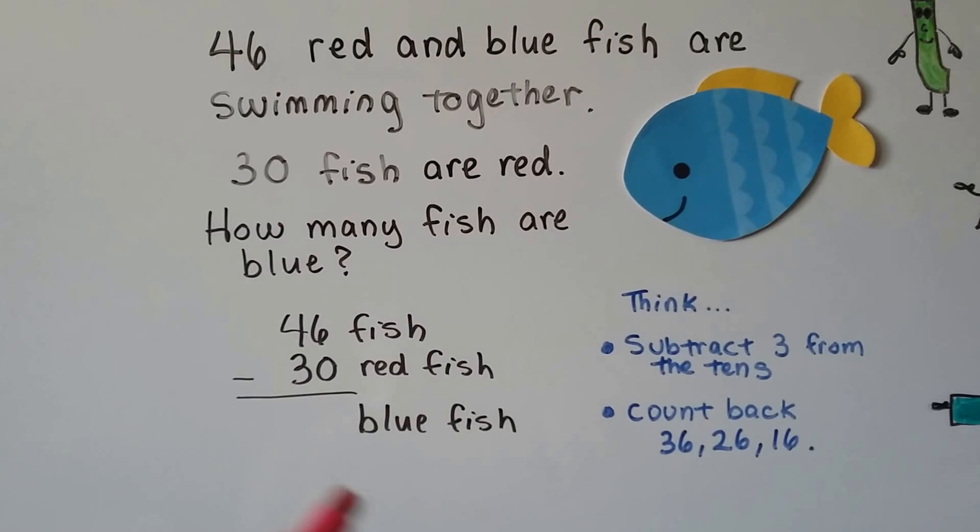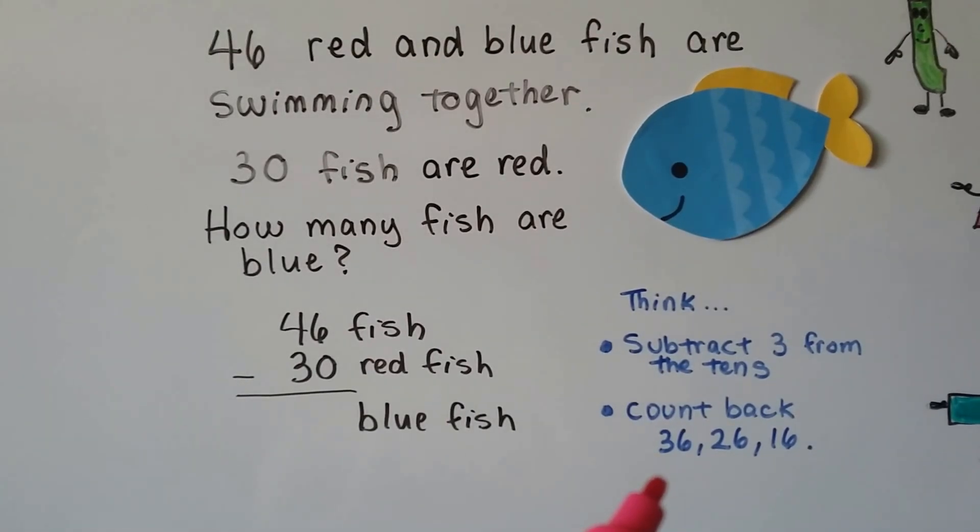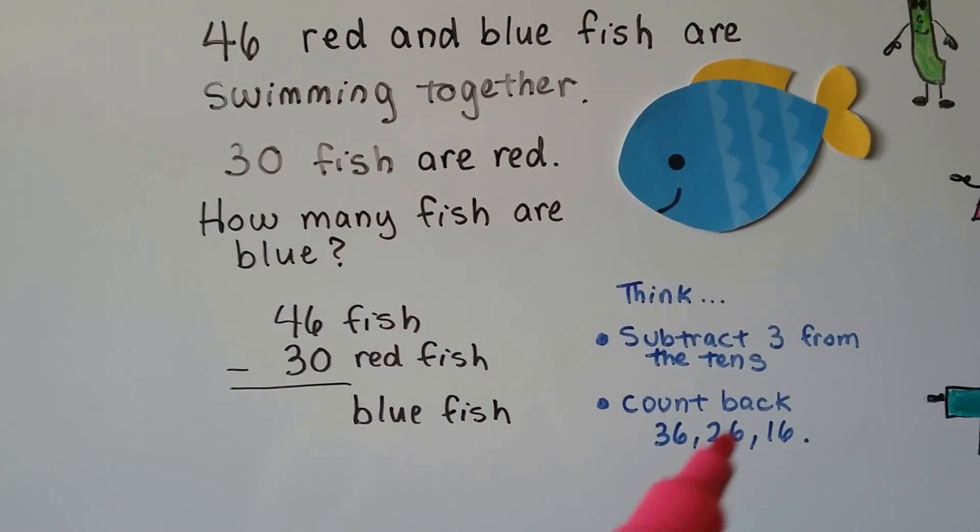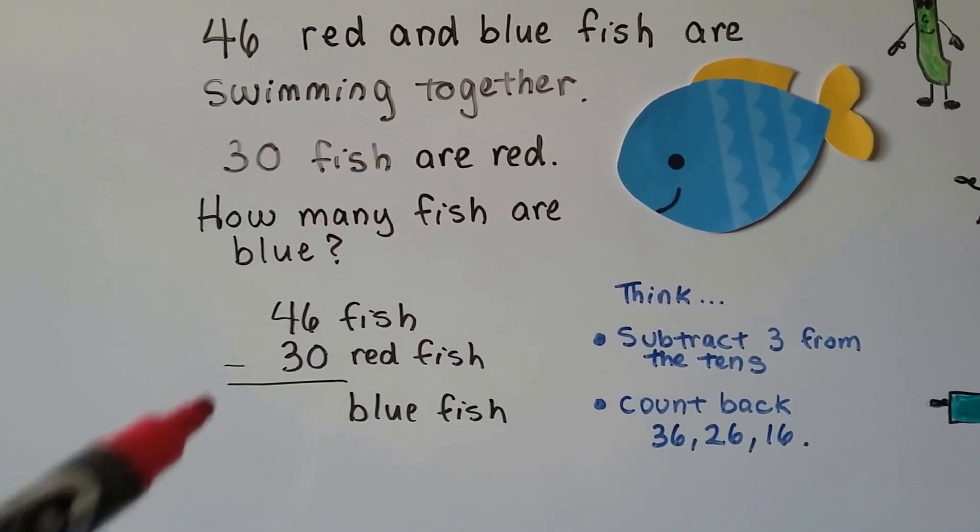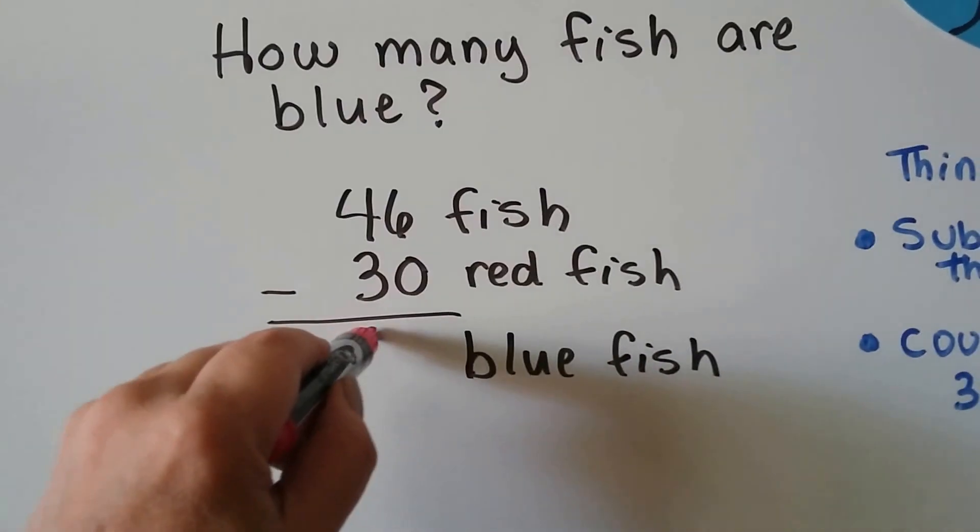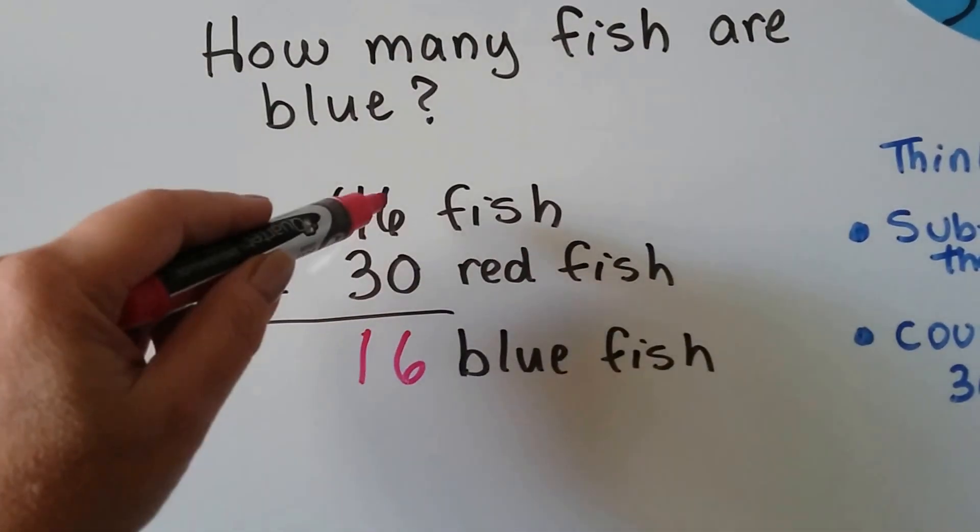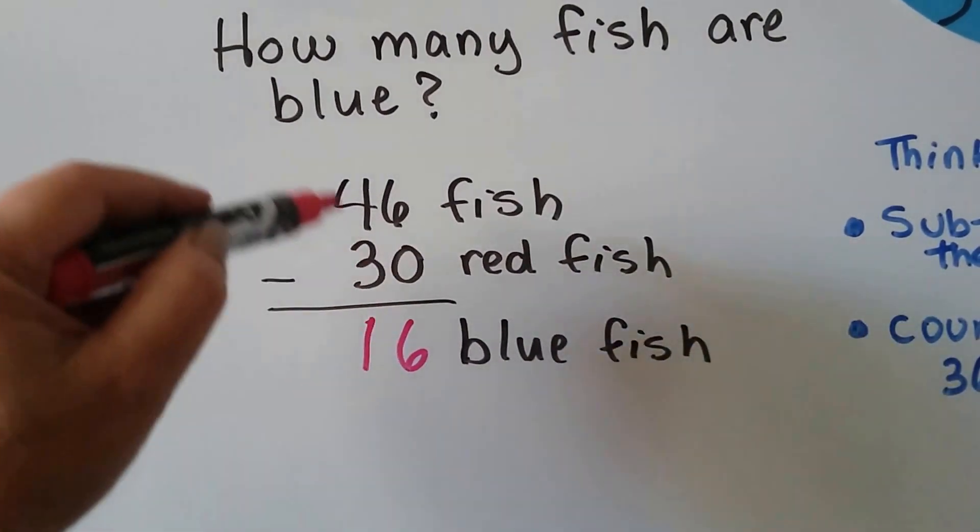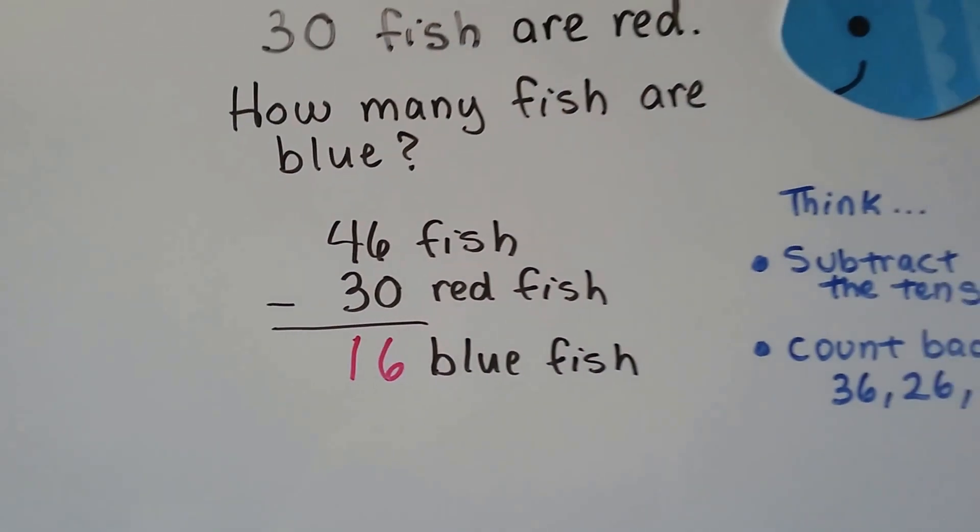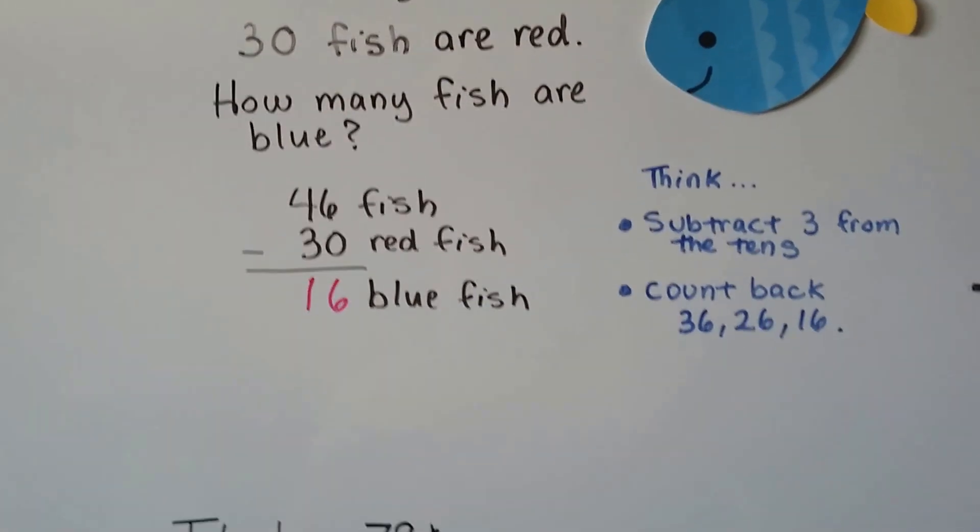We could also count back by tens to 36, 26, 16. 46 minus 30 is 16. 6 take away 0 is 6, and 4 take away 3 is 1. There's 16 blue fish. Let's try it again.